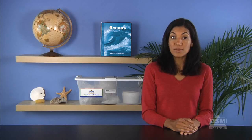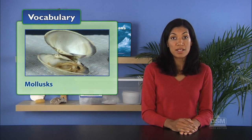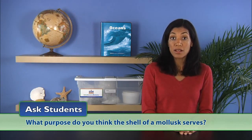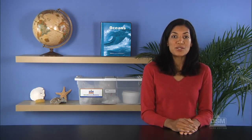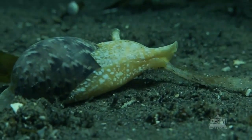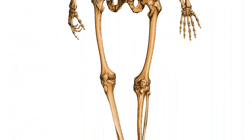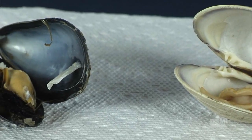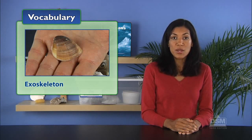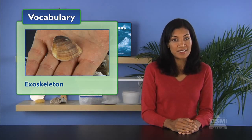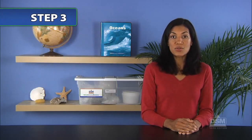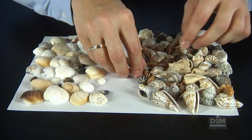Tell students to empty the bag of shells onto one sheet of paper and give them a few minutes to examine each shell. Ask students what shells are and where they come from. Students probably know that shells are the hard remains of once-living sea animals. Explain that the animals who lived in these shells are called mollusks, which means soft-bodied. Ask students what purpose they think the shell of a mollusk serves. Help students understand that the hard shell protects the soft body of the mollusk inside. Just as our skeleton is on the inside and gives our bodies form and protects our vital organs, mollusk skeletons are on the outside — their external skeleton or exoskeleton is their shell, which serves to protect the soft body of the animal that lives inside it.